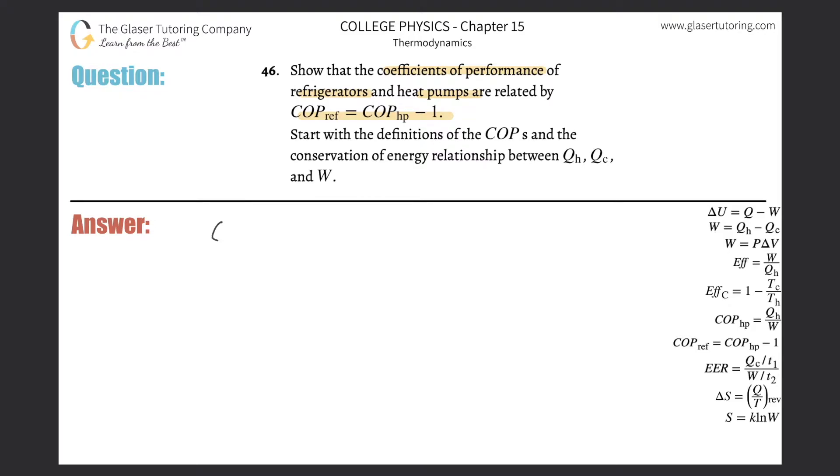All right, so coefficient of performance for a refrigerator is basically equal to Q sub C, or the heat removed from that cold environment, divided by the work needed in order to accomplish that.